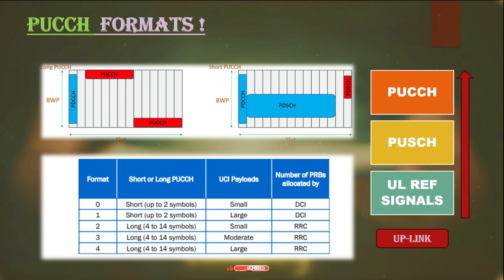Long PUCCH allows more users to have multiplexed resources from the PRB grid, meaning more users can be served. It also provides more resources for users at the cell edge. Long PUCCH gives more coverage and stability — not because radio coverage increases, but because having more resources provides better redundancy and ability to serve more users.